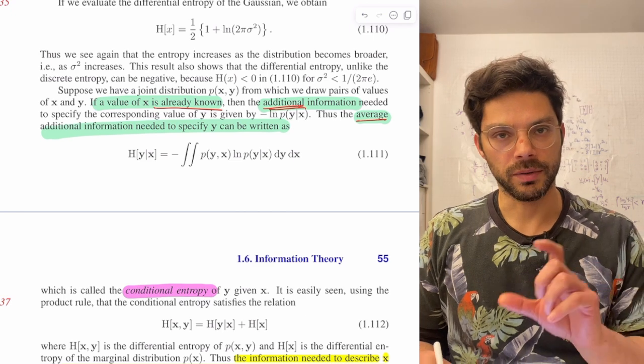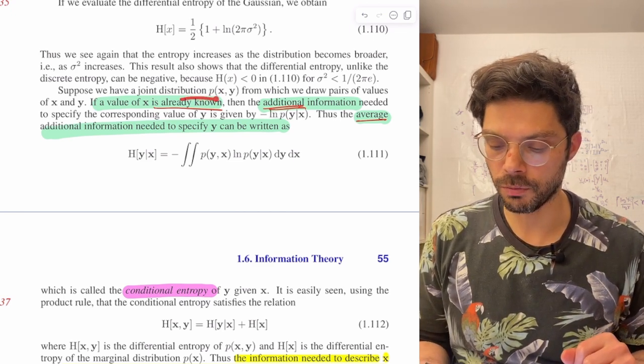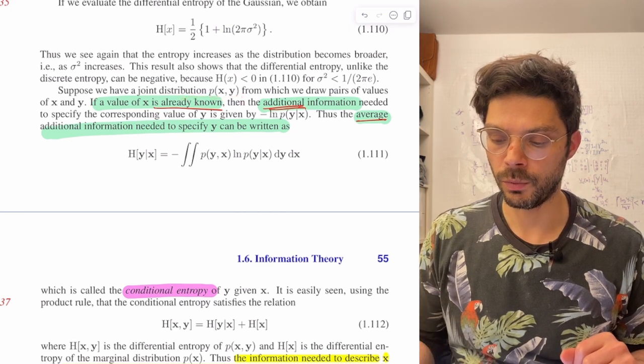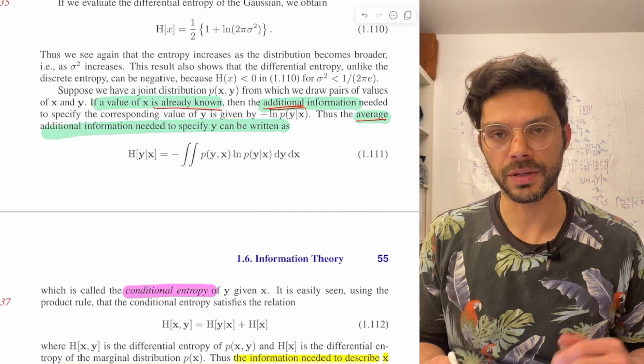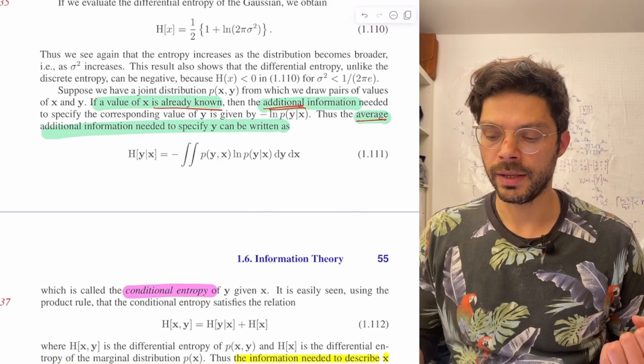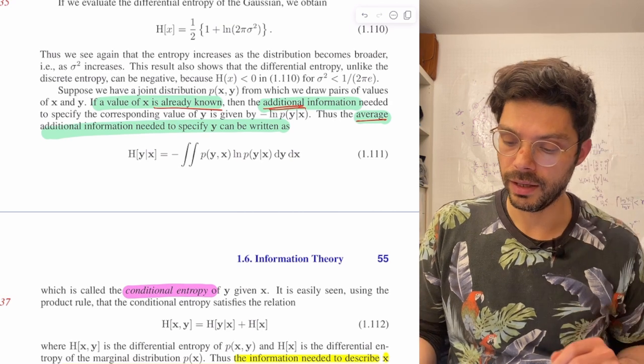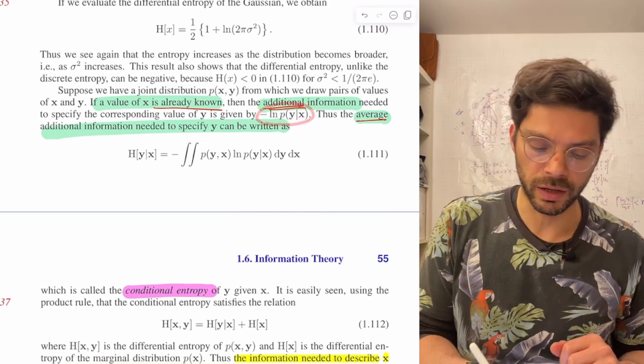Again, we're talking about pairs of variables here. Suppose we have a joint distribution p of x, y, from which we draw pairs of values of x and y. If we have a value of x that's already known, then the additional information we need to specify the corresponding value of y is minus ln p of y over x.